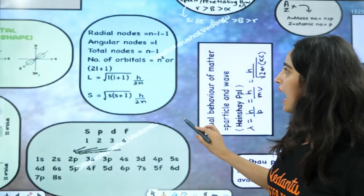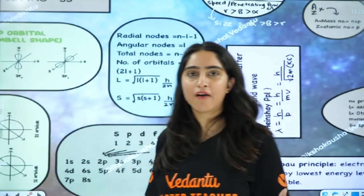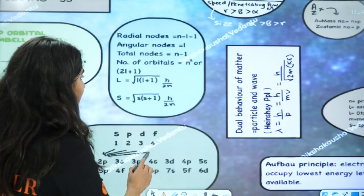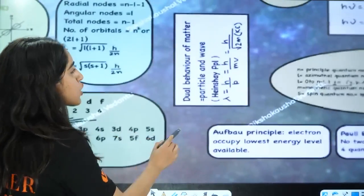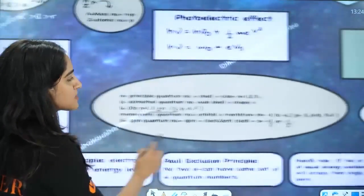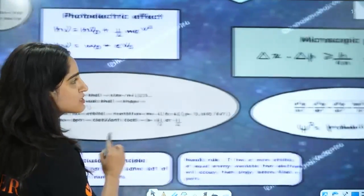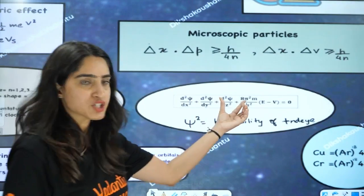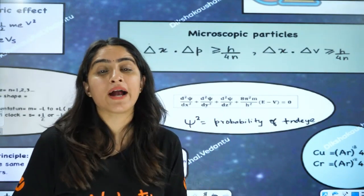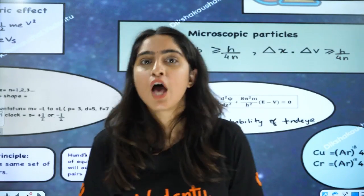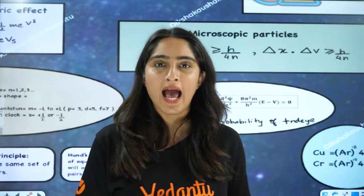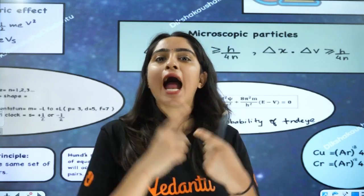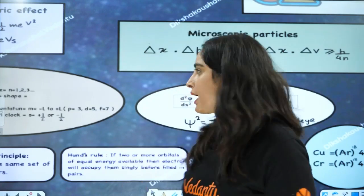Now we have started quantum mechanics. Quantum mechanics is based on the Schrödinger wave equation. The solution of this equation gives the probability of finding the electrons. From that we get radial nodes, angular nodes, and quantum numbers.